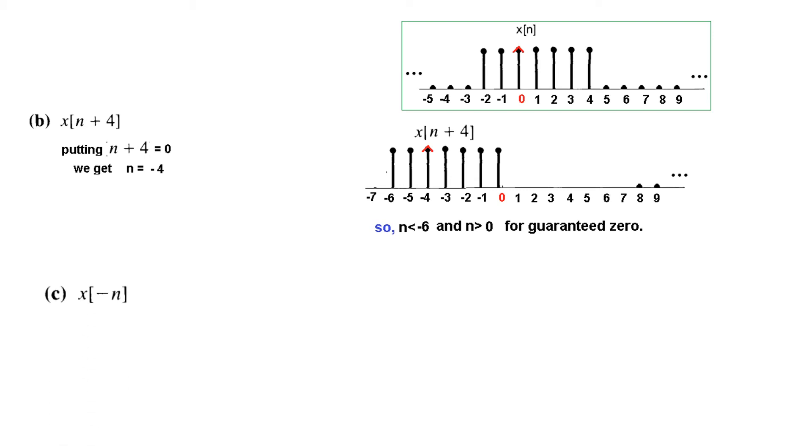Third point is x[minus n]. And I hope you know what minus n means. It means that the signal is flipped, reversed. So this is our signal x[n]. When we flip it from right to left at this point, at this is our axis, then the signal will be called x[minus n]. Just like here.